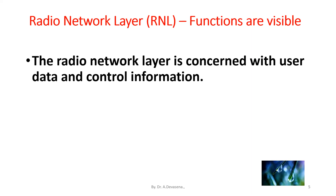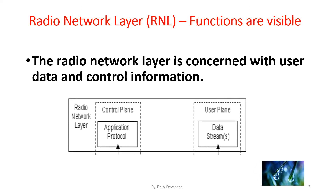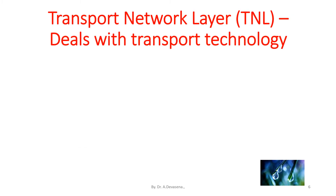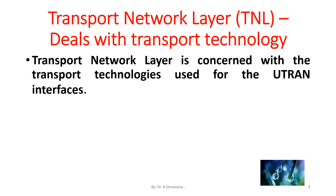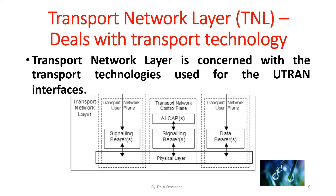The radio network layer is concerned with user data and control information. The representation of the radio network layer is shown below. The transport network layer is concerned with the transport technologies used for the U-tron interfaces. The representation of the transport network layer is shown below.